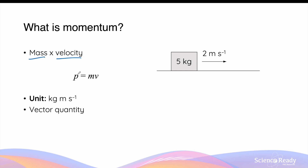The equation is simple. Momentum is represented by the letter P, and this equals the mass of the object in kilograms multiplied by its velocity in meters per second. This is why the units for momentum are kilograms meters per second.